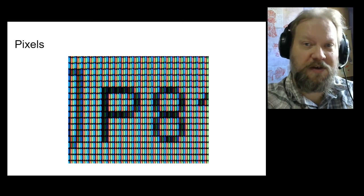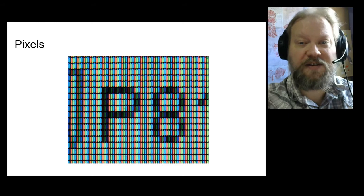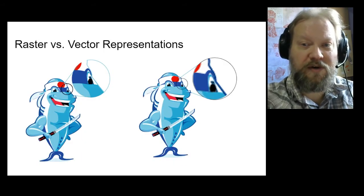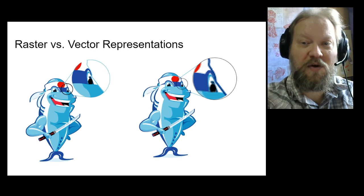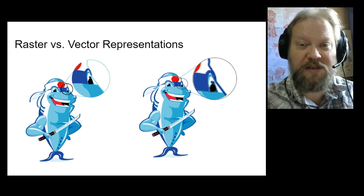For CRT monitors, these pixels are created with glowing phosphorus dots, while for LCD screens they are an open or closed liquid crystal gate that allows the monitor's backlight to pass through a color filter. But when we store graphics as a file, we have a choice: we can either store that pixel data as it would appear on the screen, which we call raster graphics, or we can store the instructions on how to draw it, which we call vector graphics. Raster graphics include file formats like JPEGs, bitmaps, GIFs, and PNGs, while vector graphics are primarily represented by SVG files.